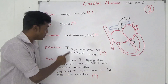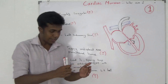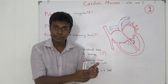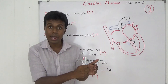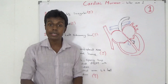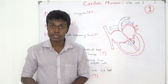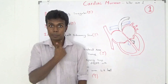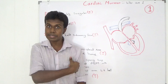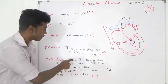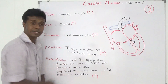When I palpate for the apex, the nature of the apex is tapping. The apex comes and just taps my hand. It is undisplaced — in proper position, not displaced. It is at the mid-clavicular line, 5th intercostal space. Apex: tapping and undisplaced.